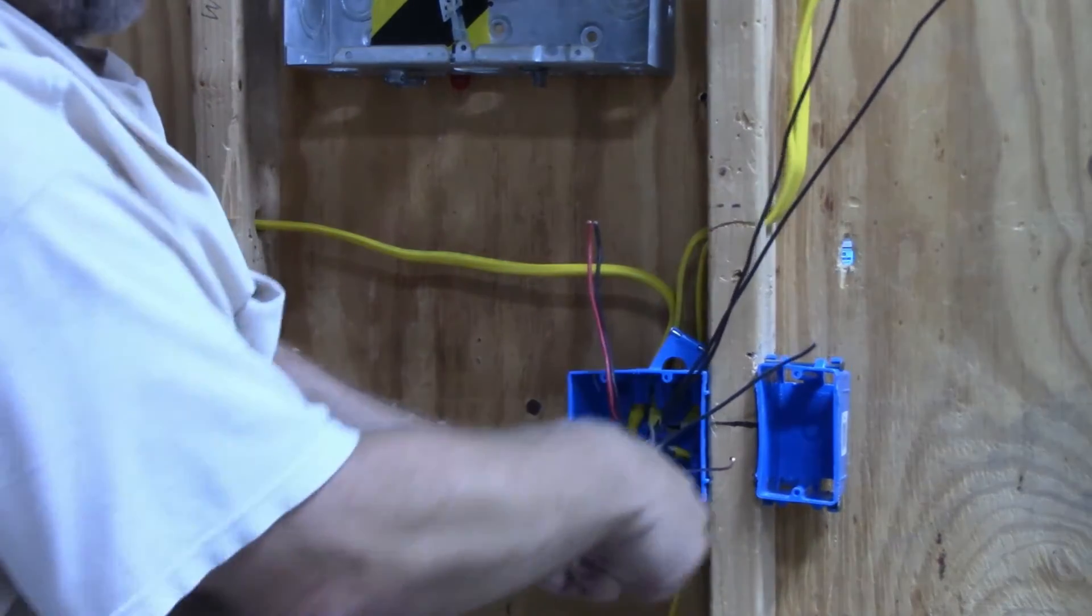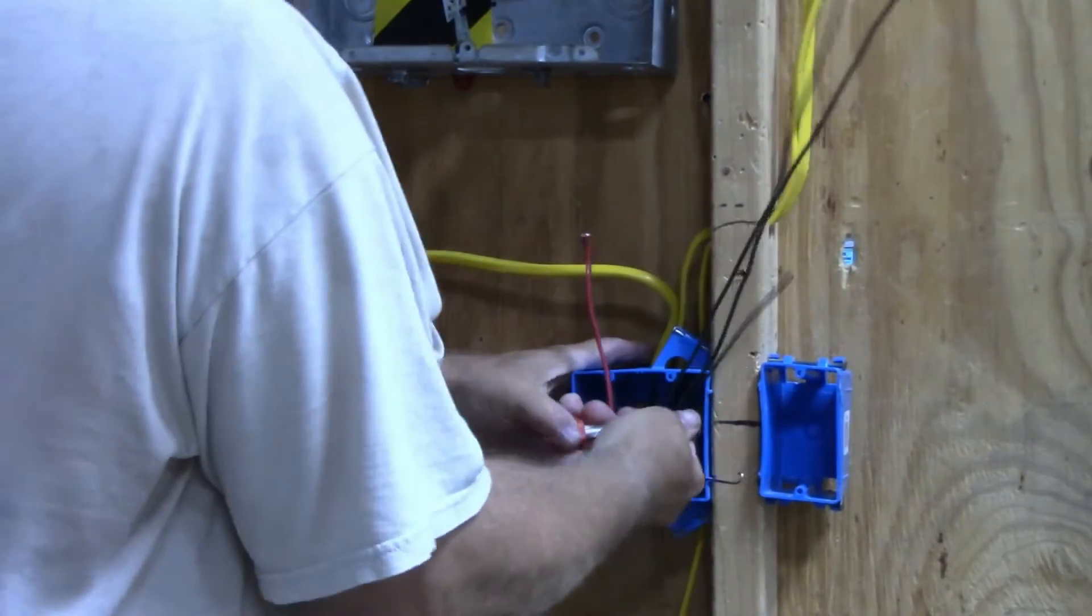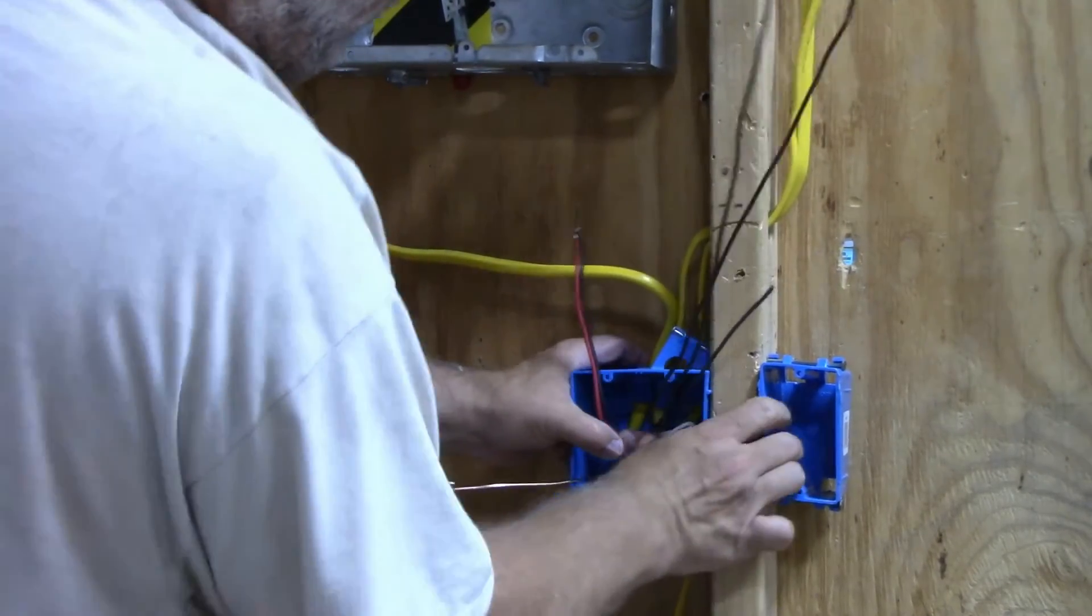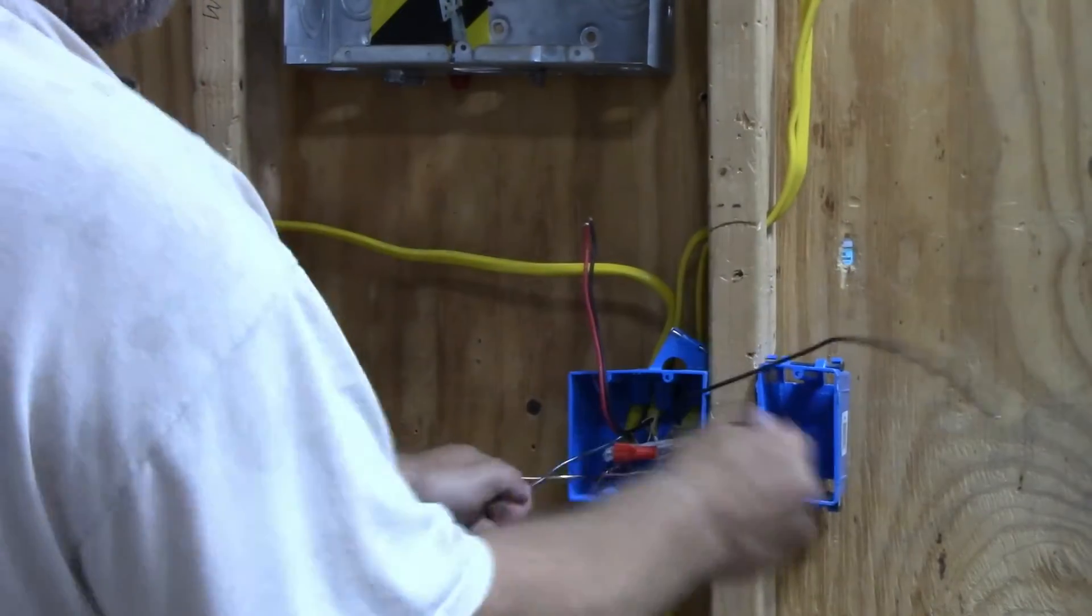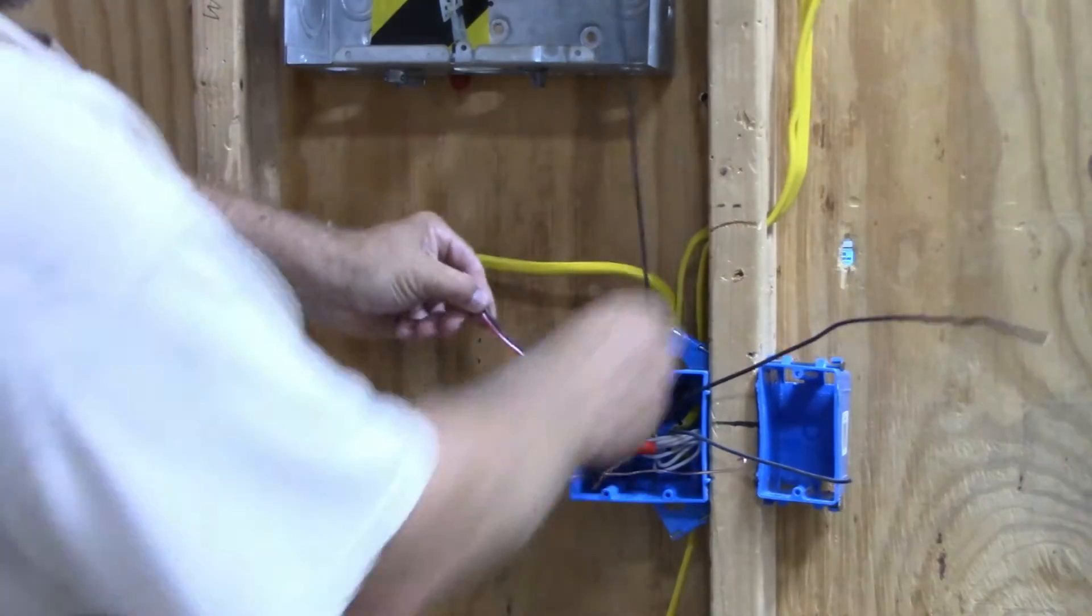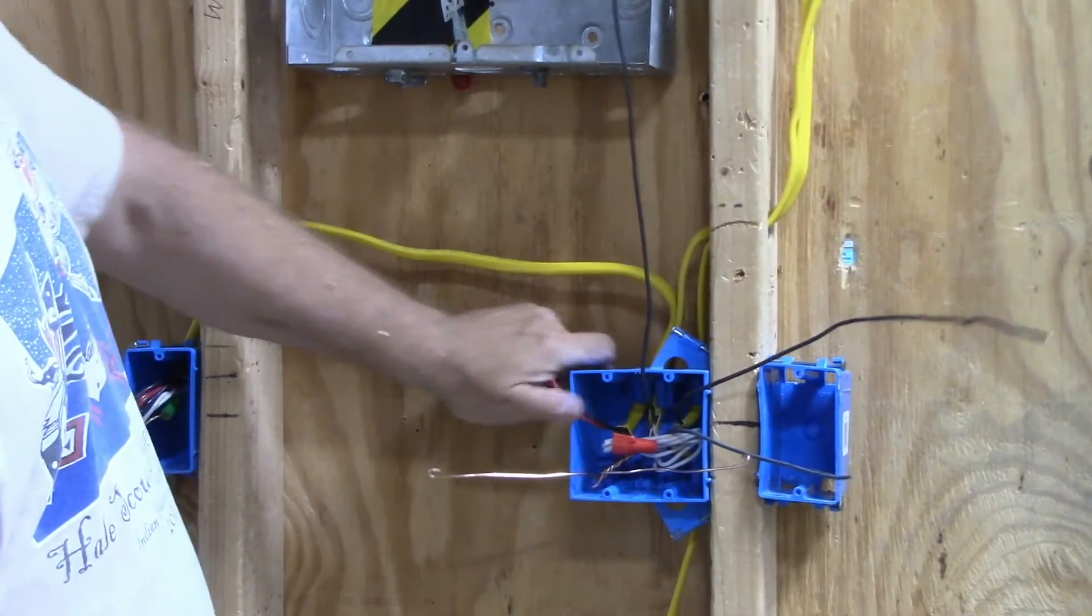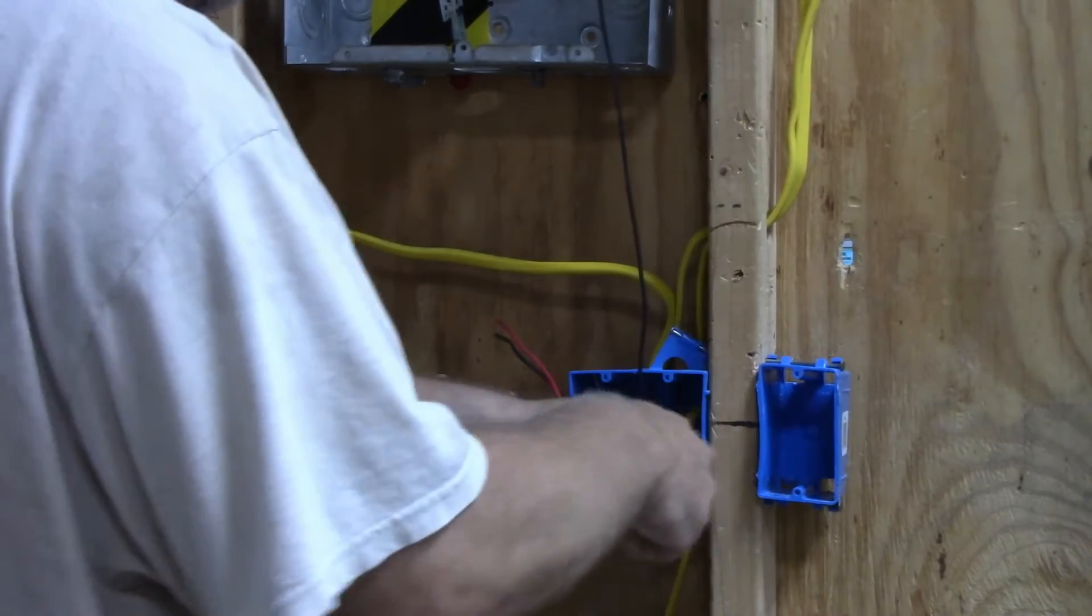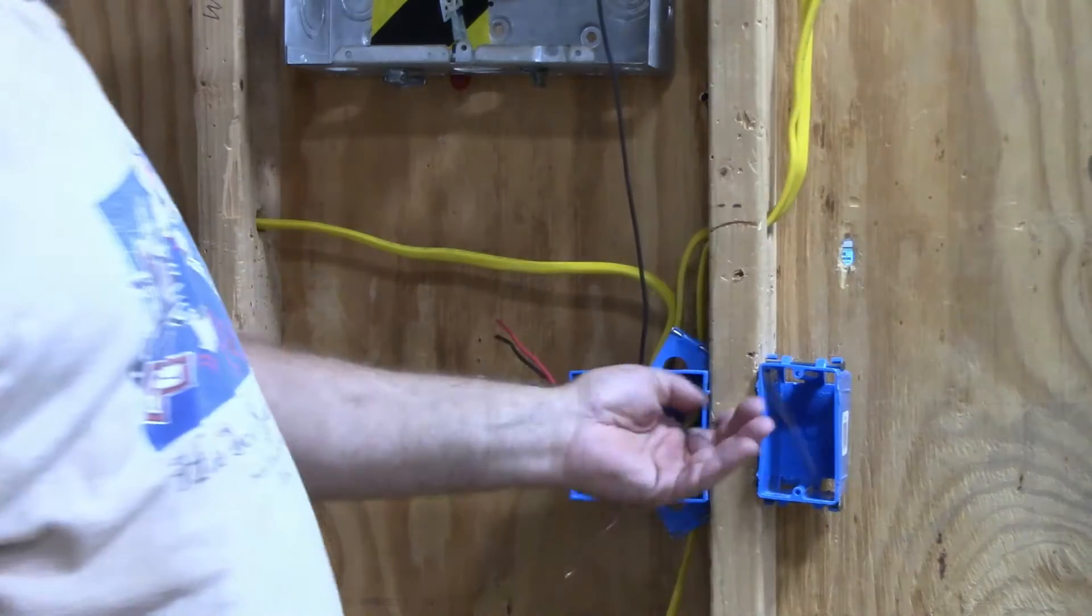Since I'm not putting the neutrals on there, I'm just going to fold this back into the box. This wire is my switch leg for my light. This is my three-way going off in this direction. That leaves me with these two wires right here, which is the power in and power going out.